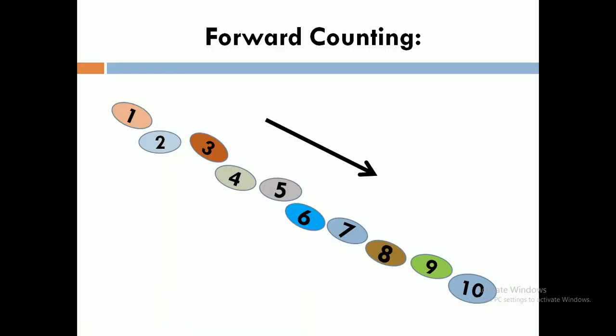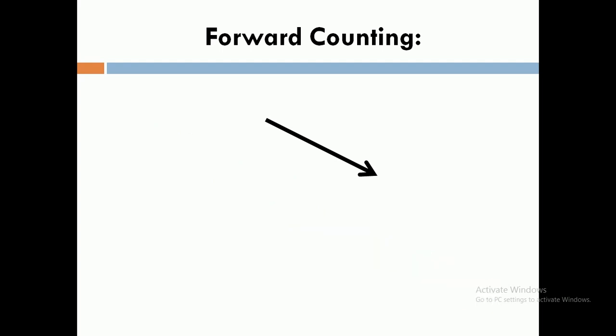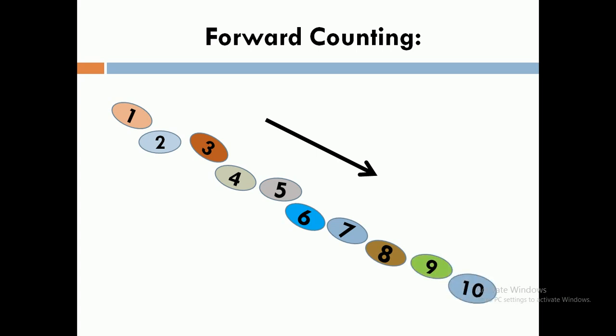First of all, I will explain forward counting. In forward counting, students, we go in the forward direction. I start from number one and go forward. As you can see, two after one, then three, four, five, six, seven, eight, nine, ten. This is forward counting.